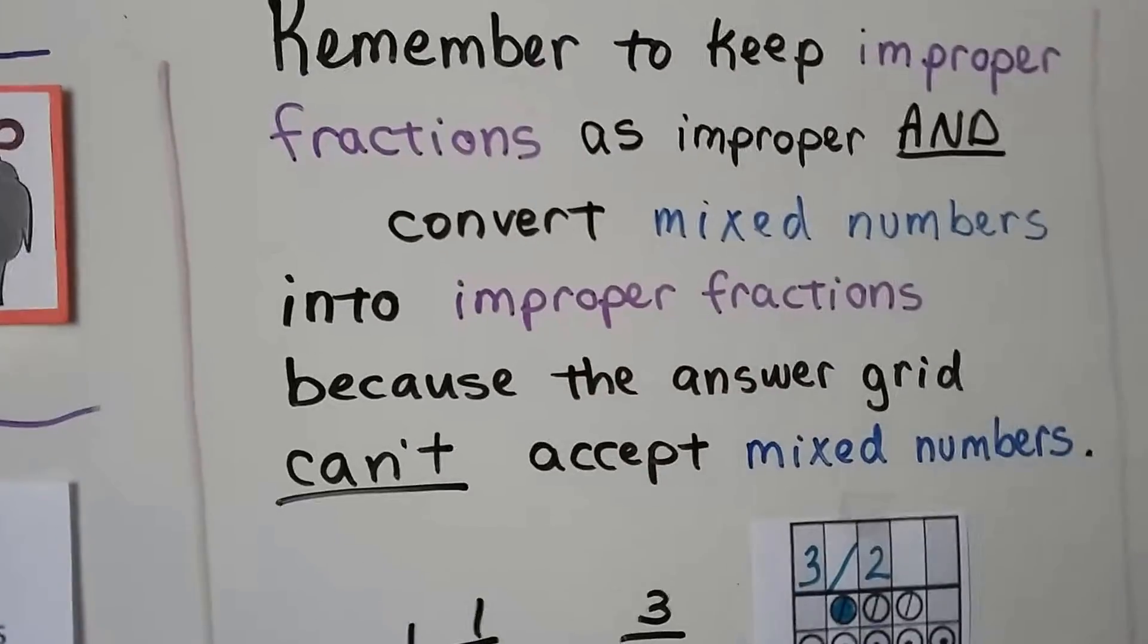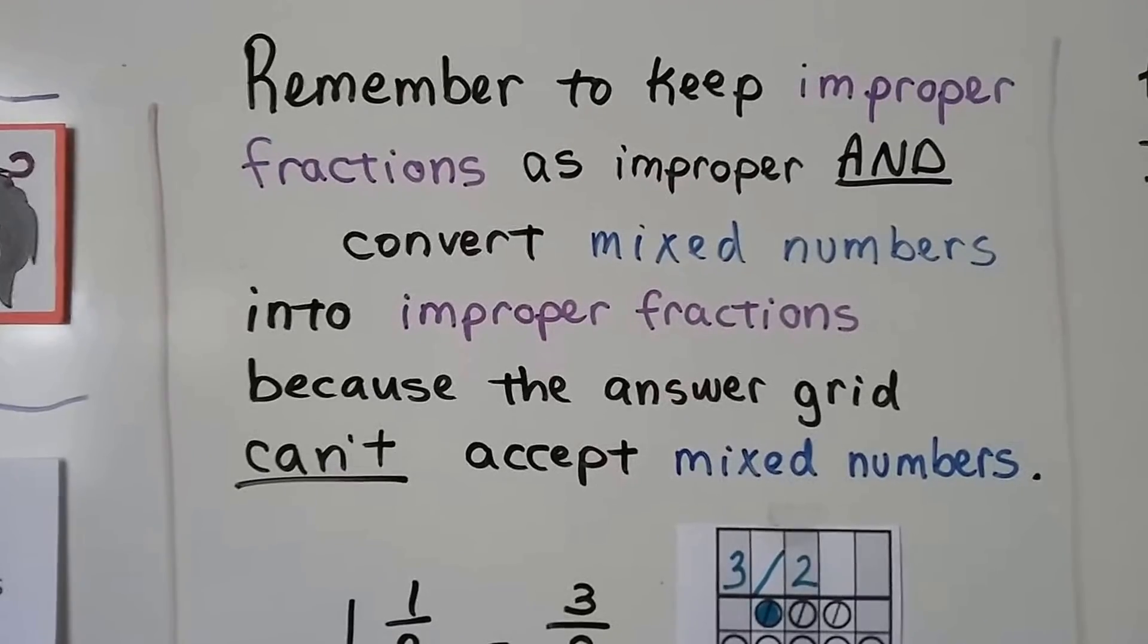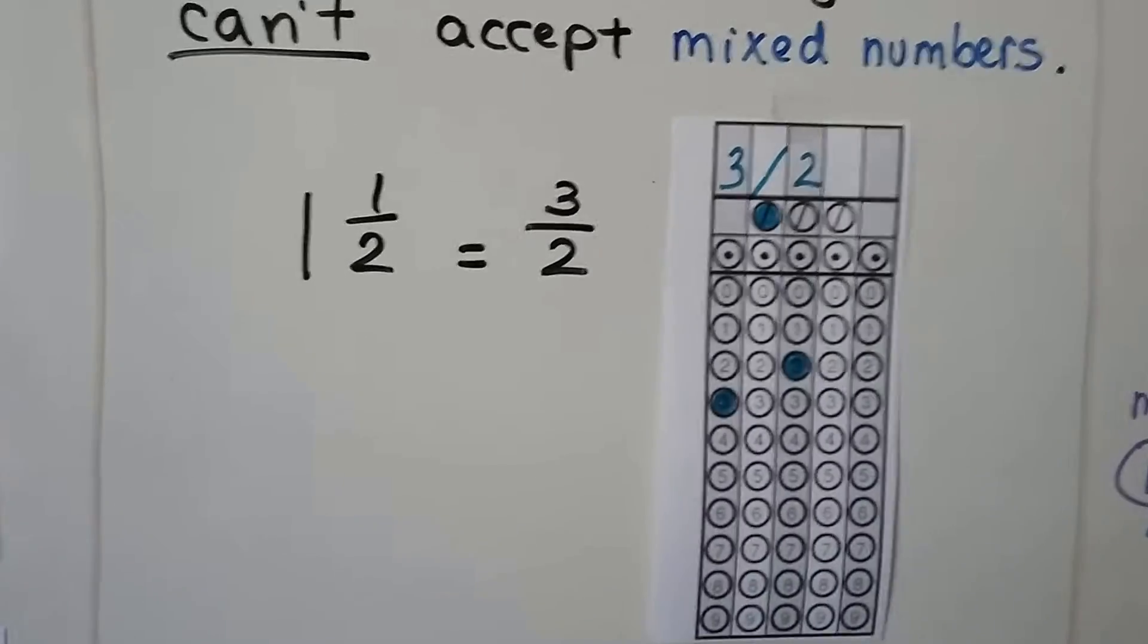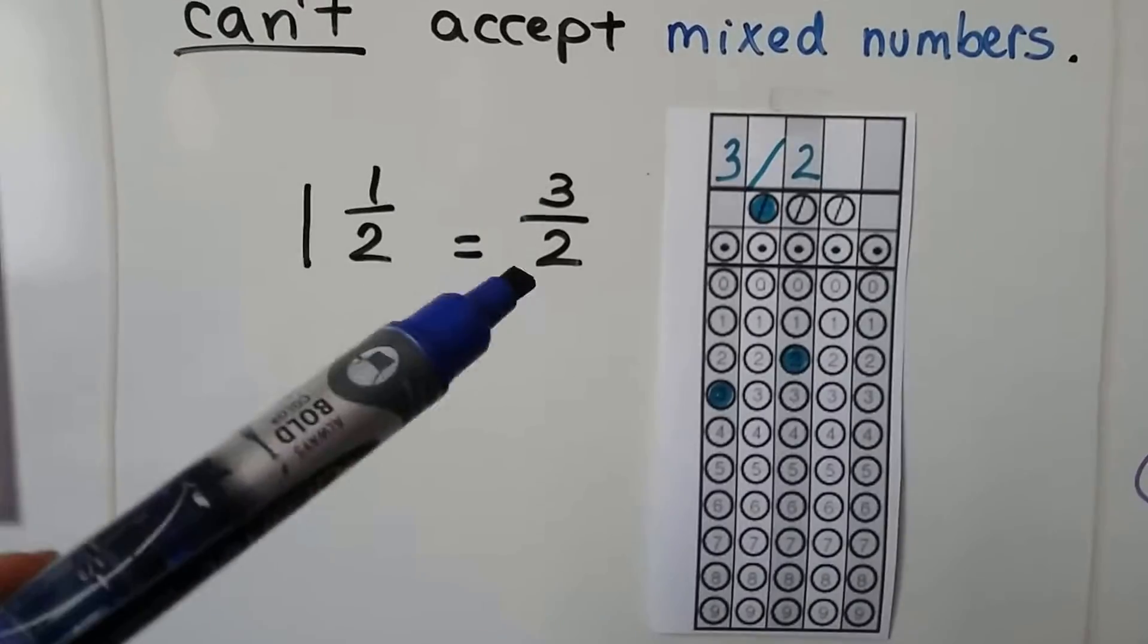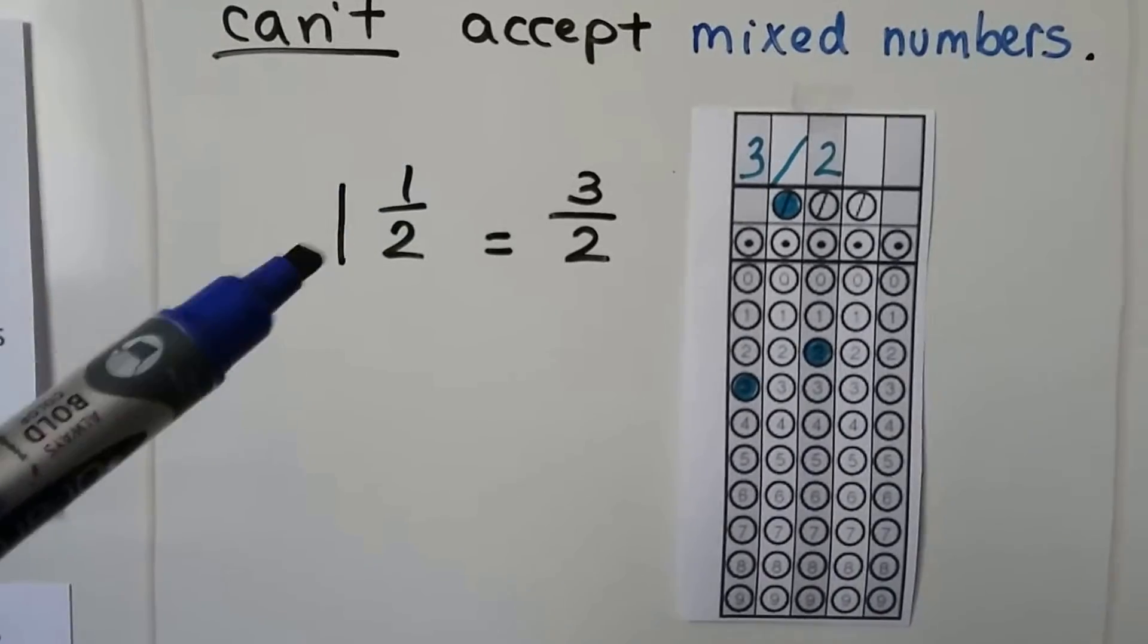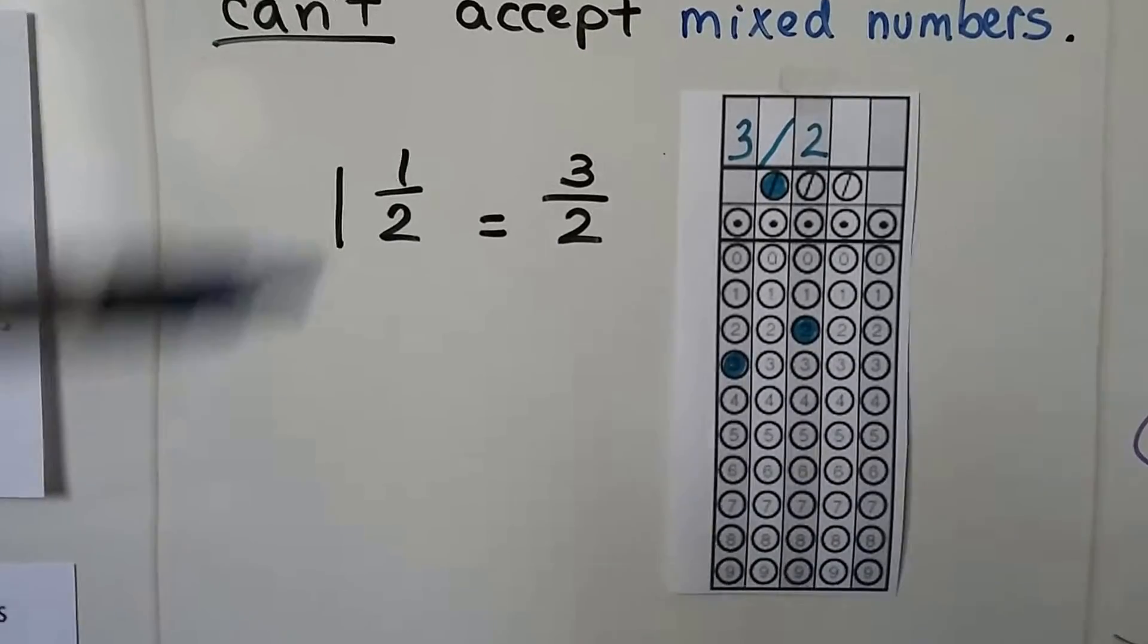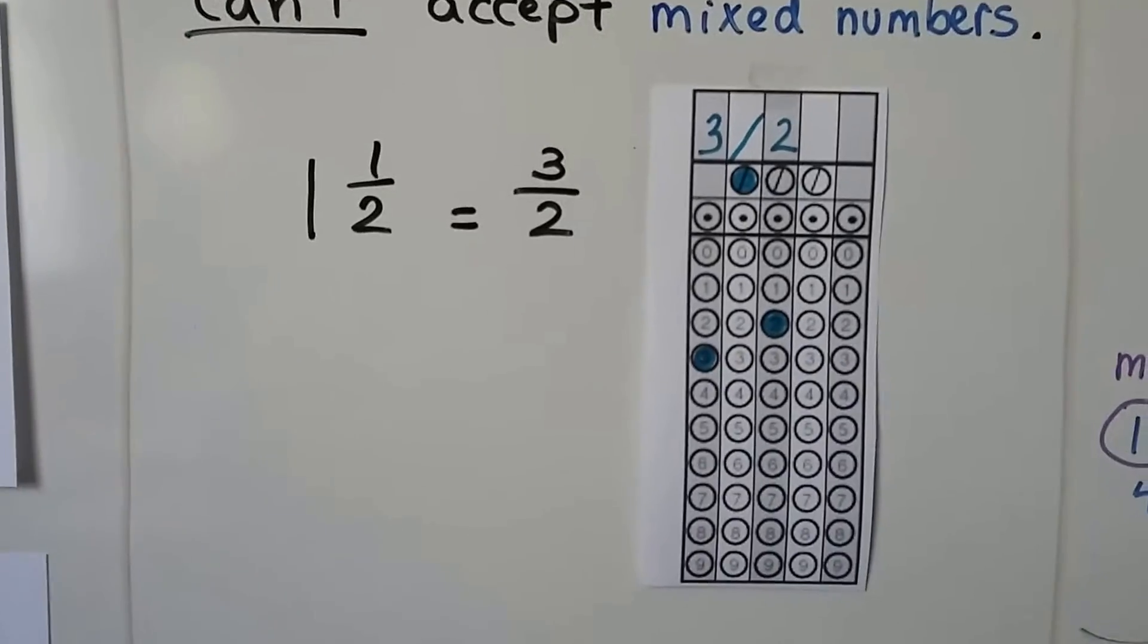We have to remember to keep improper fractions as improper and convert mixed numbers into improper fractions, because the answer grid can't accept mixed numbers. You cannot write a mixed number in these standard grids. If we have an answer of 1 and a half, we have to have it as three halves. We multiply the whole number by the denominator and add the numerator. So 2 plus 1 is 3, we keep that denominator. We have three halves. We write the 3, the slash, the 2, and fill in the correct circles.